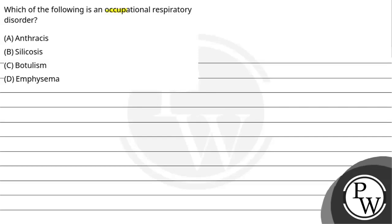Hello, children. Let's look at the question. Which of the following is an occupational respiratory disorder? Option A: anthracis. Option B: silicosis. Option C: botulism. And option D is emphysema.